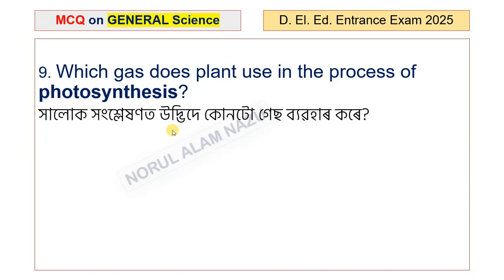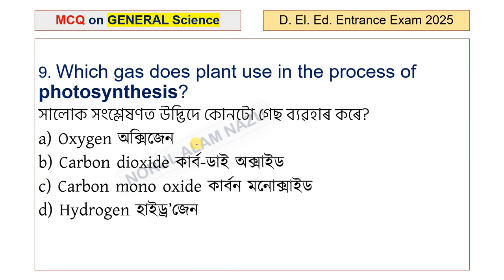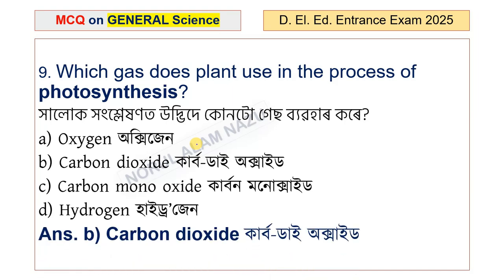Which gas does a plant use in the process of photosynthesis? The options are oxygen, carbon dioxide, carbon monoxide, and hydrogen. The answer is option B: carbon dioxide.